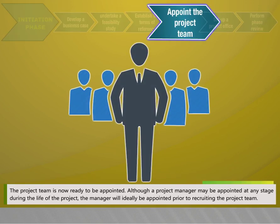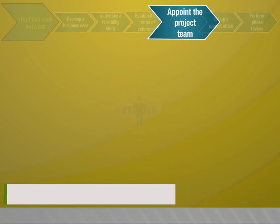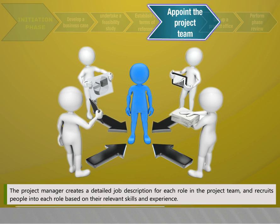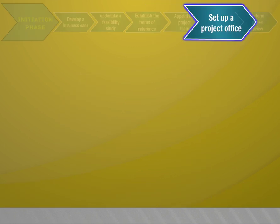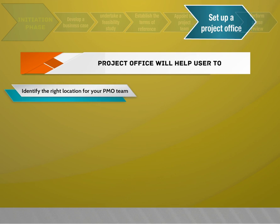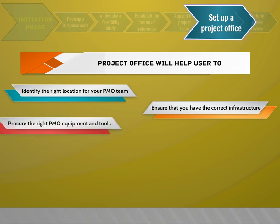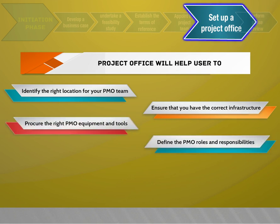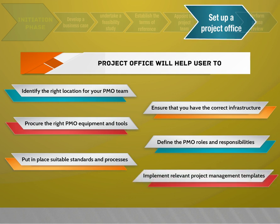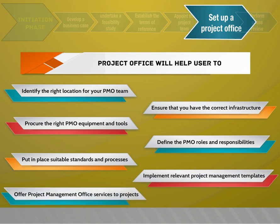The project team is now ready to be appointed. The project manager creates a detailed job description for each role in the project team and recruits people based on their relevant skills and experience. Setting up the project office includes identifying the right location for the PMO team, ensuring the correct infrastructure, procuring the right PMO equipment and tools, defining PMO roles and responsibilities, implementing relevant project management templates, and offering project management office services to projects.